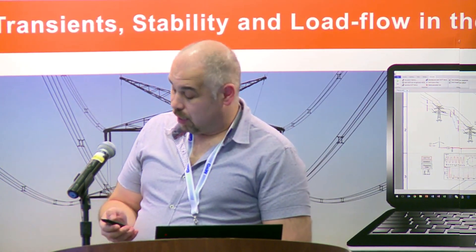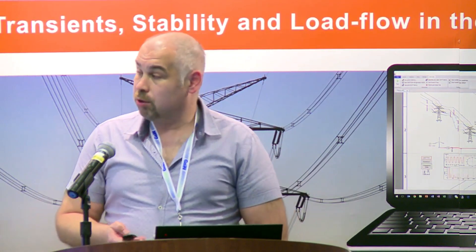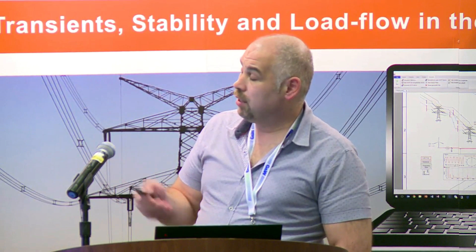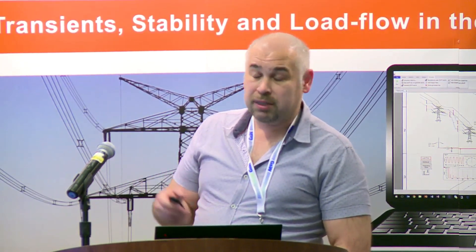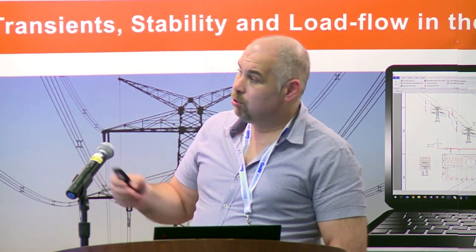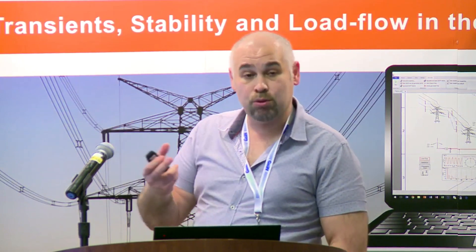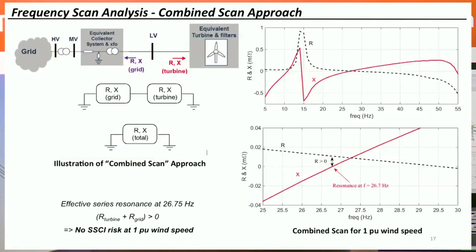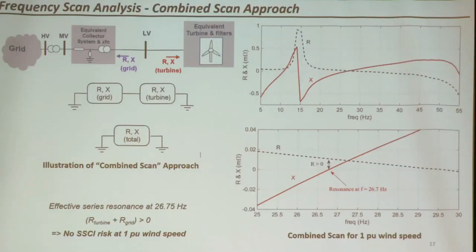This technique was proposed after the ERCOT event. However, the original assessment criteria were not accurate — it recommended performing grid-side and turbine-side frequency scans separately. In reality, both contribute to the resonant conditions, so you must account for both. The grid-side impedance and wind turbine-side impedance must be added together to obtain the combined system characteristics and check for the reactance crossover condition.